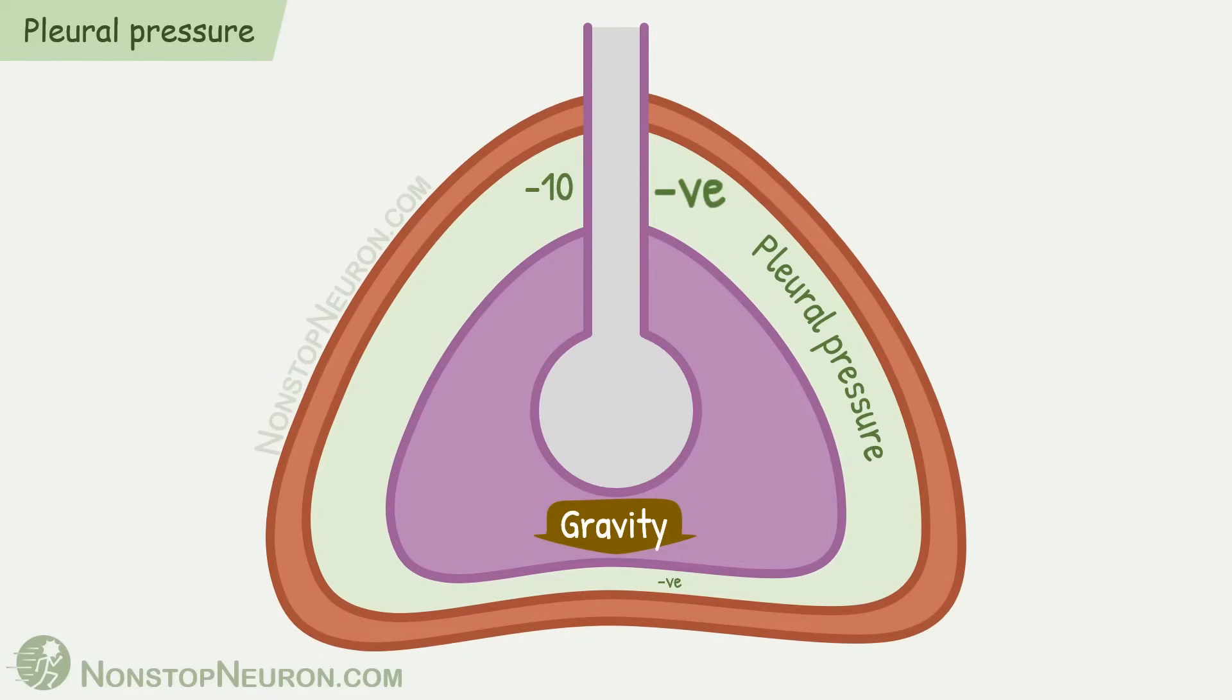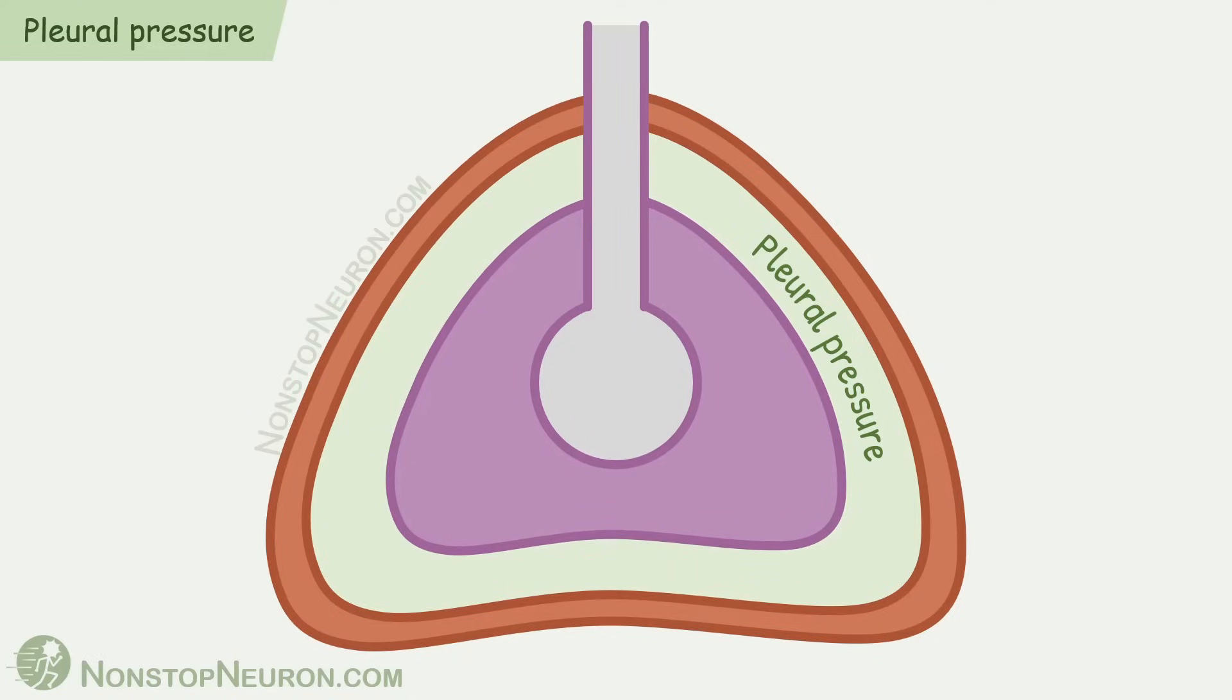After quiet expiration, pressure at the apex is about -10 cm of water. At mid-level, it is about -5 cm of water. And at the base, it is about -2.5 cm of water. To keep the discussion simple, the pressure is usually considered uniform throughout the height. So this was about pleural pressure.